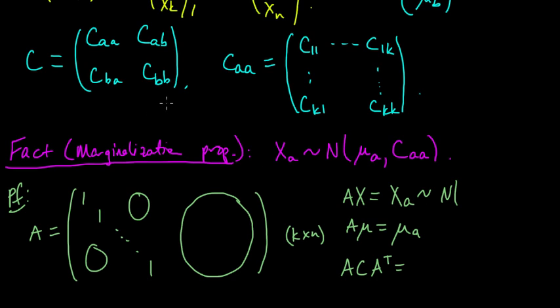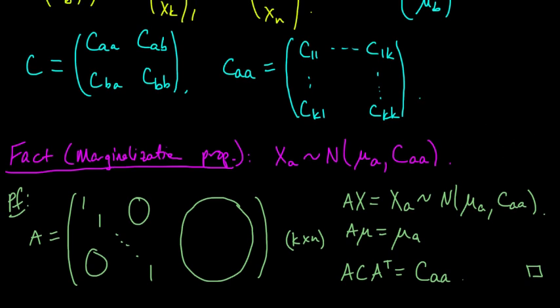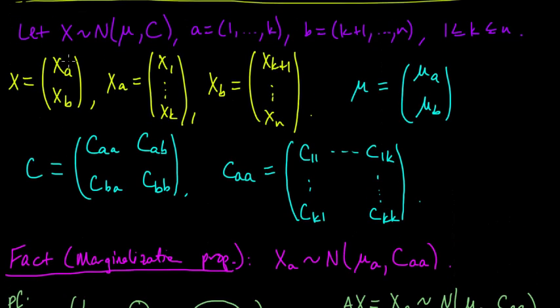And therefore, XA has multivariate normal distribution with mean mu A and covariance CAA just as we wanted. And you can do the same thing for XB. You just project onto the last N minus K coordinates. So this little argument here actually generalizes. Here we were just decomposing it into the first part and the second part. But of course, you can take any subset of indices.